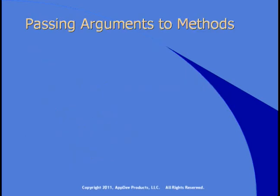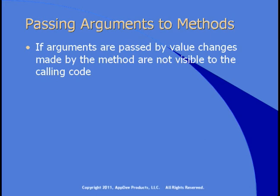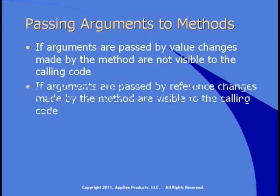There are two ways you can pass arguments to methods: by value and by reference. If you pass arguments by value, then any changes you make to that argument inside the method are not visible to the calling code. On the other hand, if you pass an argument by reference, then any changes made in the method are visible to the calling code.